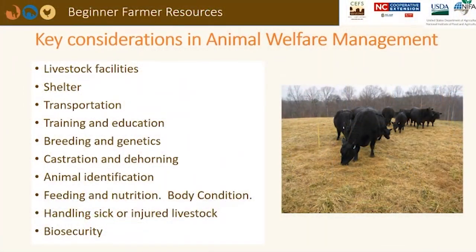Thinking about animal welfare principles: first, we need facilities that are useful and safe for both us and the livestock. Pens and fences need to be good quality and restrain animals appropriately. We'll talk about that further when we discuss infrastructure. Animals also need proper shelter — not necessarily a barn, but a place where they can get out of the wind in the wintertime and get in the shade in the summertime.